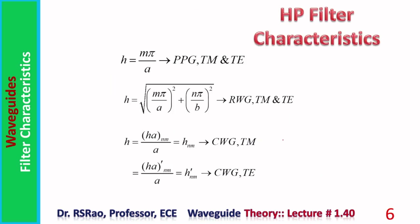Now, fc = h / (2π√με), and h assumes different values for different situations. For the parallel plate guide, h = mπ/a, where a is the spacing and m is the mode number — valid for both TM and TE modes. For rectangular waveguides, h = √[(mπ/a)² + (nπ/b)²], where m and n are mode numbers and a, b are the guide dimensions with a being the wider dimension. For circular waveguides, h = h_nm / a for TM modes and h = h'_nm / a for TE modes, where a is the radius.